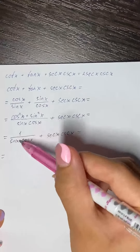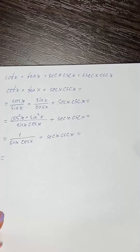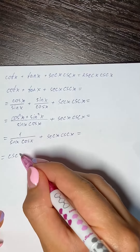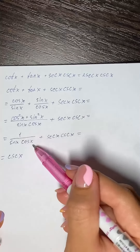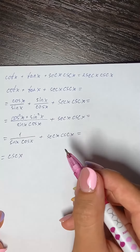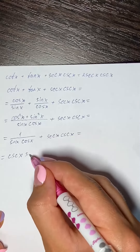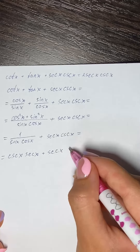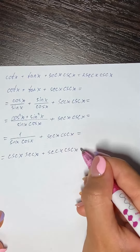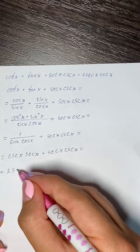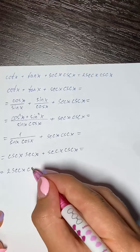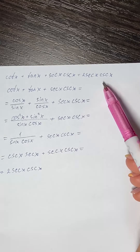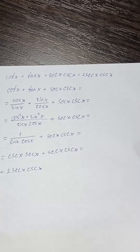So 1 over sine of x is the same thing as cosecant of x, and 1 over cosine of x is the same thing as secant of x. And now we have 2 times secant of x times cosecant of x. So we get the right hand side, hence the result is proved. Thank you.